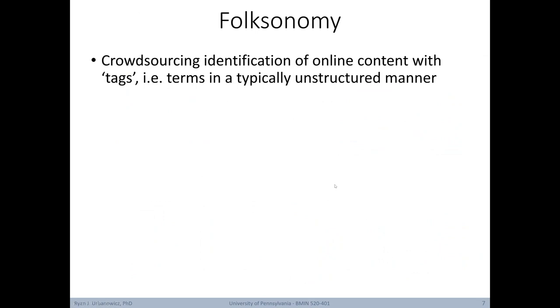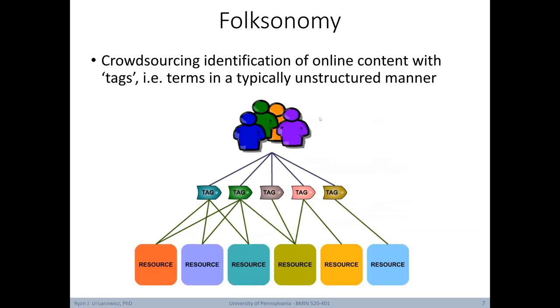Now let's take a closer look at folksonomies. Here we're trying to crowdsource the identification of online content with tags. This is usually done in a fairly unstructured manner. For example, we could have people across the internet providing tags to pictures or videos or topics of discussion or really anything that might benefit from some sort of label. By tagging such items with terms, it makes it easier for people to find resources they're looking for.